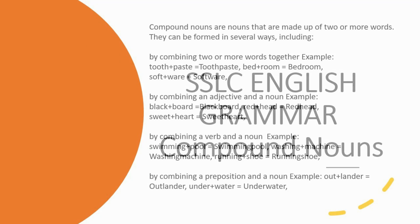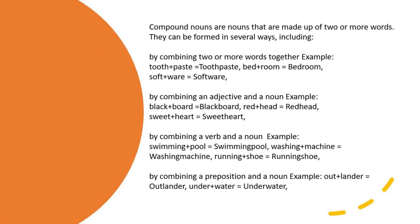SSLC English grammar: compound nouns. Compound nouns are made up of two or more words. They can be formed in several ways, including by combining two or more words.